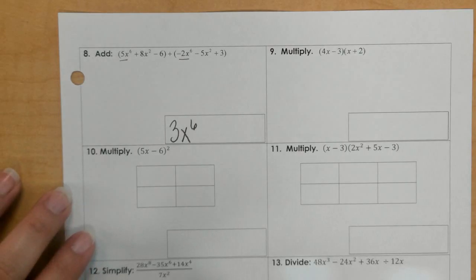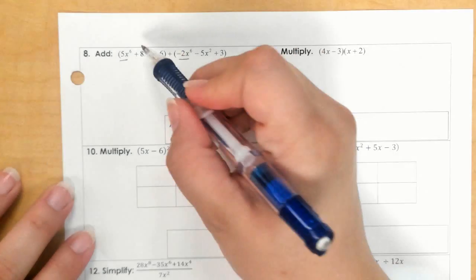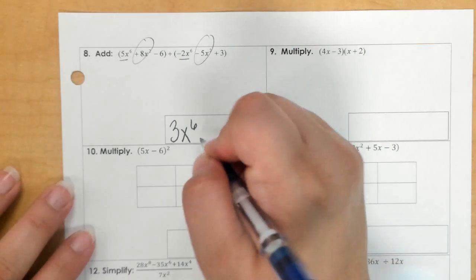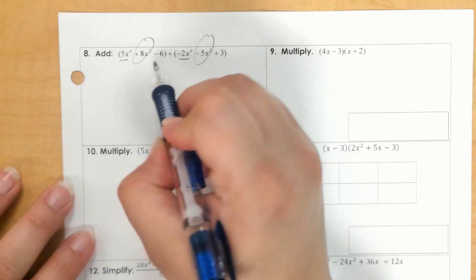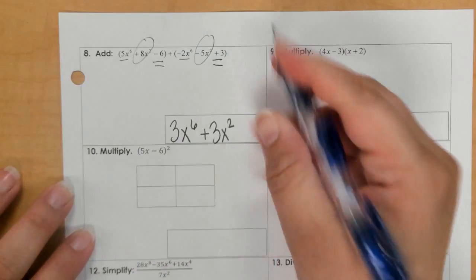Then our next exponent would be 2. So 8x squared minus 5x squared is 3x squared. And then lastly, we have negative 6 plus 3, and that's negative 3.